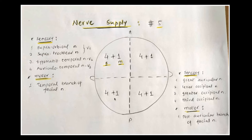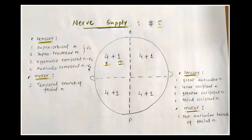The five nerves in front of the plane of the ear: four sensory — supraorbital and supratrochlear (branches of the ophthalmic division of trigeminal), zygomaticotemporal (branch of maxillary), and auriculotemporal (branch of mandibular) — and one motor: the temporal branch of the facial nerve.